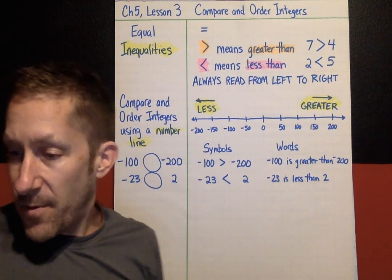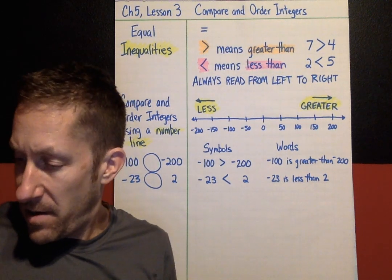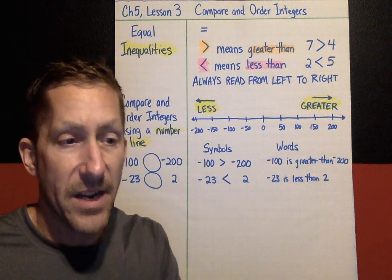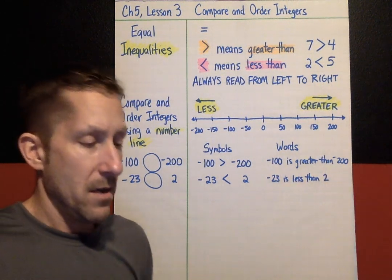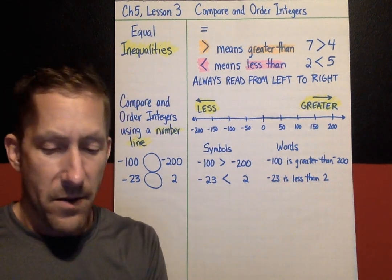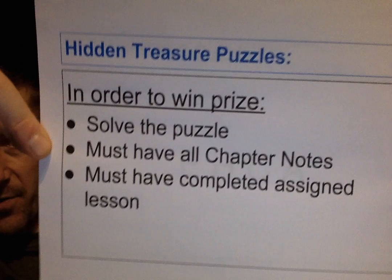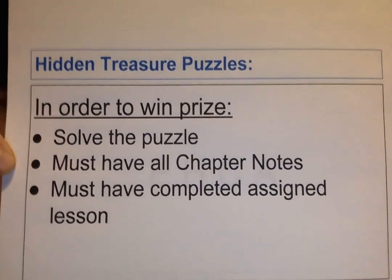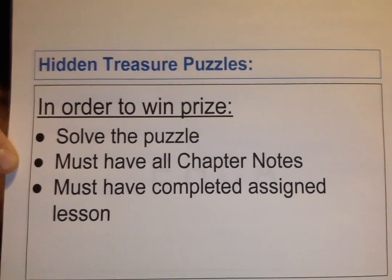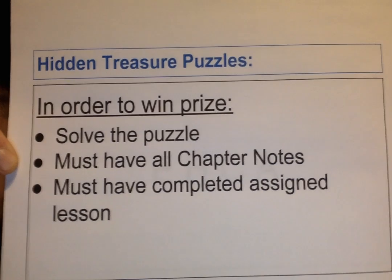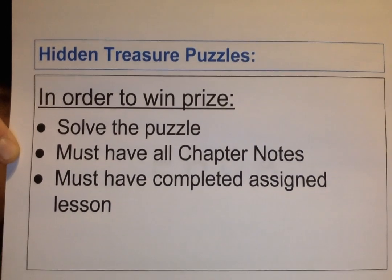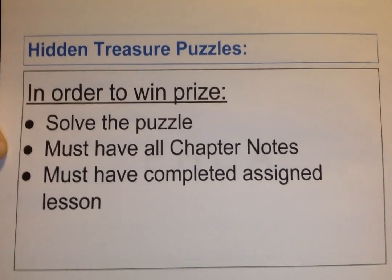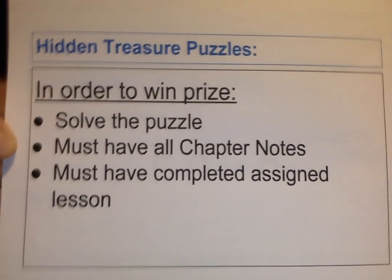Time for Chapter 5, Lesson 3 puzzle. Reminder: to win you have to solve the puzzle, and it must include all your notes for the whole chapter. So to win this one you'd need Lesson 1, 2, and 3 notes, and the assignment must be done.